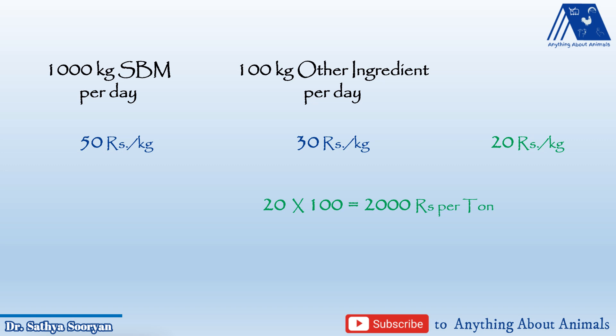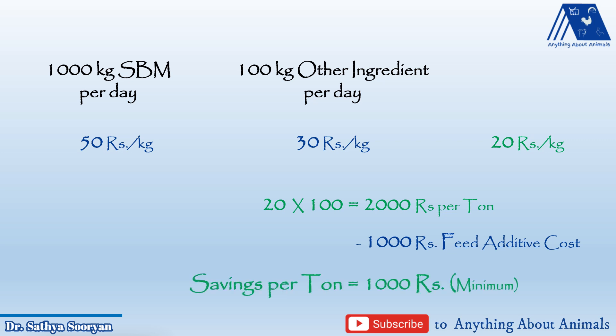There will be a few additional costs for this particular ingredient, such as protease enzymes or extra amino acids. In the maximum scenario you may spend around 1000 rupees extra, but you will still be saving 2000 rupees — so your profit is 1000 rupees. You need to see what ingredients are available in local sources.